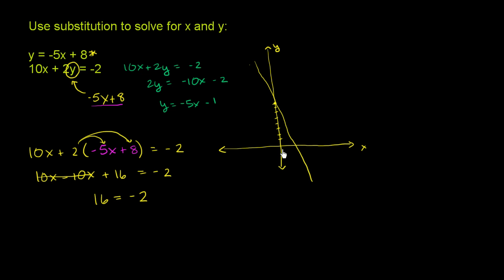So its y-intercept is negative 1. It's right over there. And it has the same slope as this first line. So it looks like this. It's parallel. It's just shifted down a bit. So it just looks like that. So they're parallel lines.